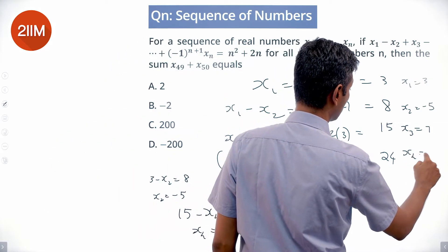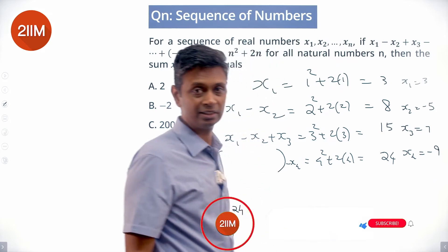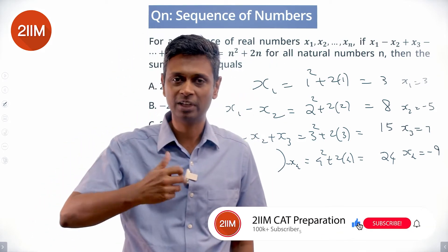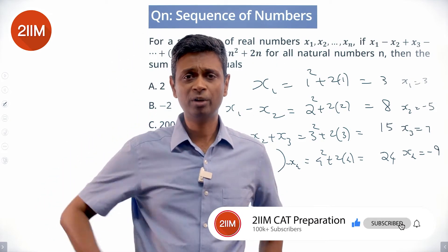Nice, we got ourselves a beautiful pattern: 3, minus 5, 7, minus 9, 11, minus 13... alternate plus and minus, just a series of odd numbers.